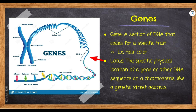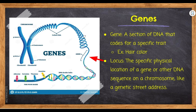Genes are just a little piece of DNA that codes for a specific trait — but really it codes for a protein, and that protein leads to that trait. If you have a certain gene it could lead to straight hair; another gene could lead to curly hair. In this example one gene codes for brown hair and another for red hair. The locus is just the specific physical location of a gene or other DNA sequence on a chromosome — kind of like a street address. You would say the gene is in the p-arm area or the q-arm area. Whenever you think of locus, think location.